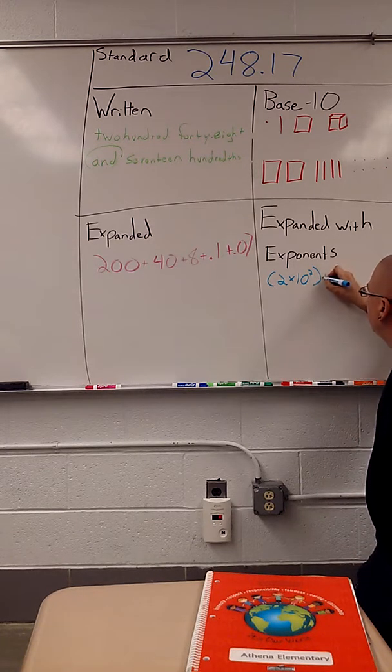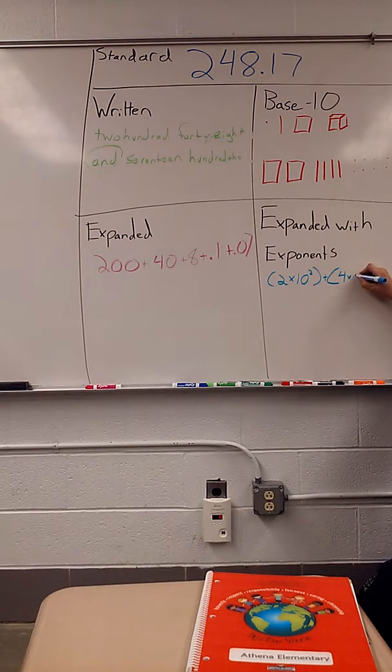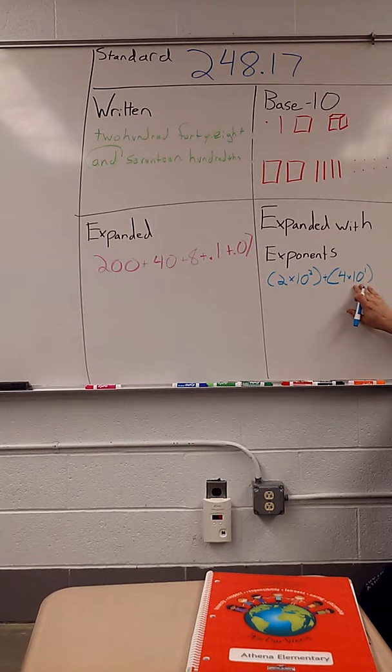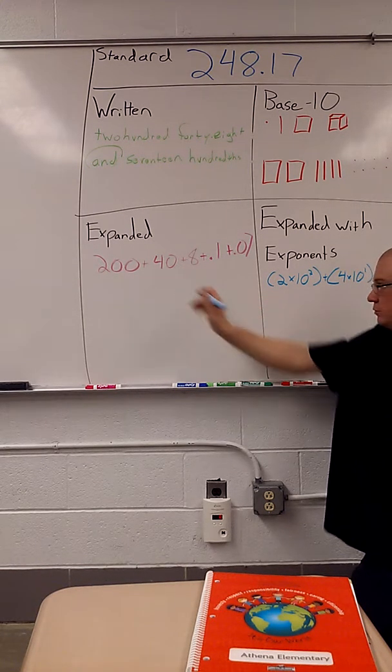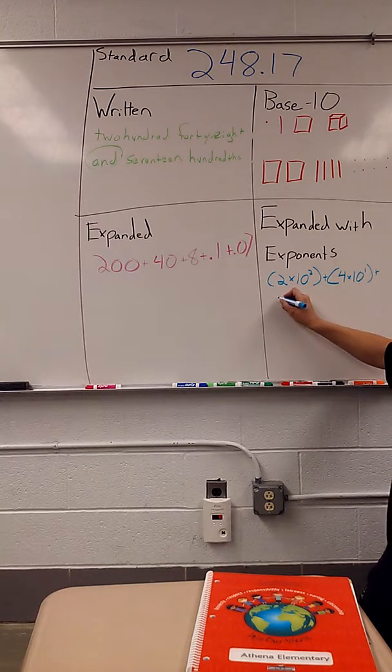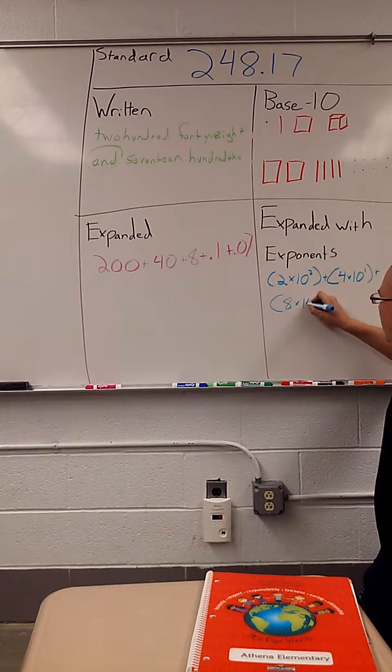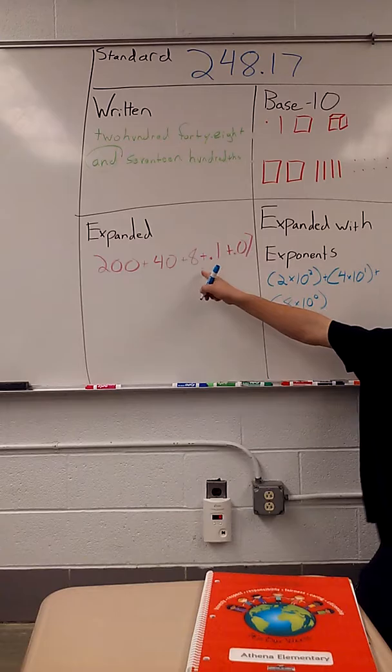Just like my four is going to be times ten to the one, ten to the first because it's a four with one zero after it. And my eight is going to be times ten to the zero because it has no zeros after it. It's just an eight.